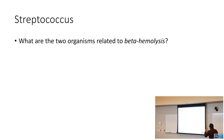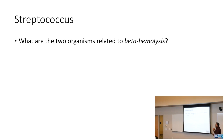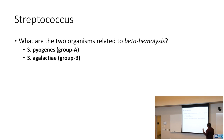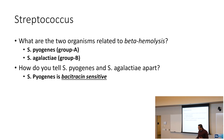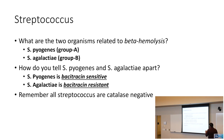The two organisms related to beta-hemolysis in strep are group A strep (strep pyogenes) and group B strep (strep agalactiae). Strep pyogenes is bacitracin sensitive, whereas strep agalactiae is bacitracin resistant. All streptococci are catalase negative.